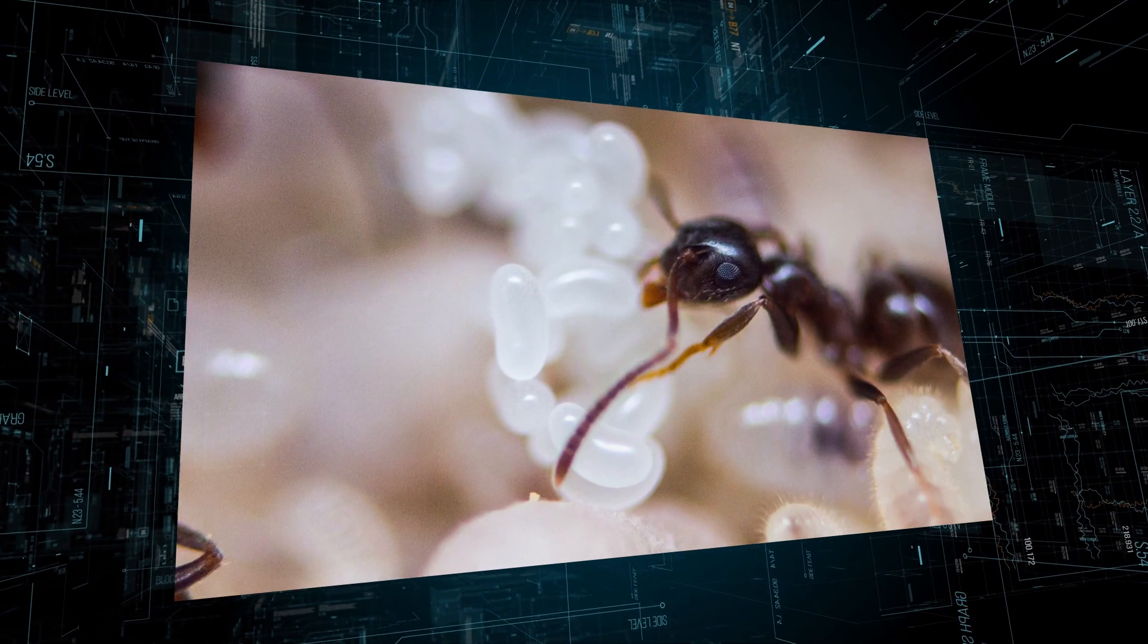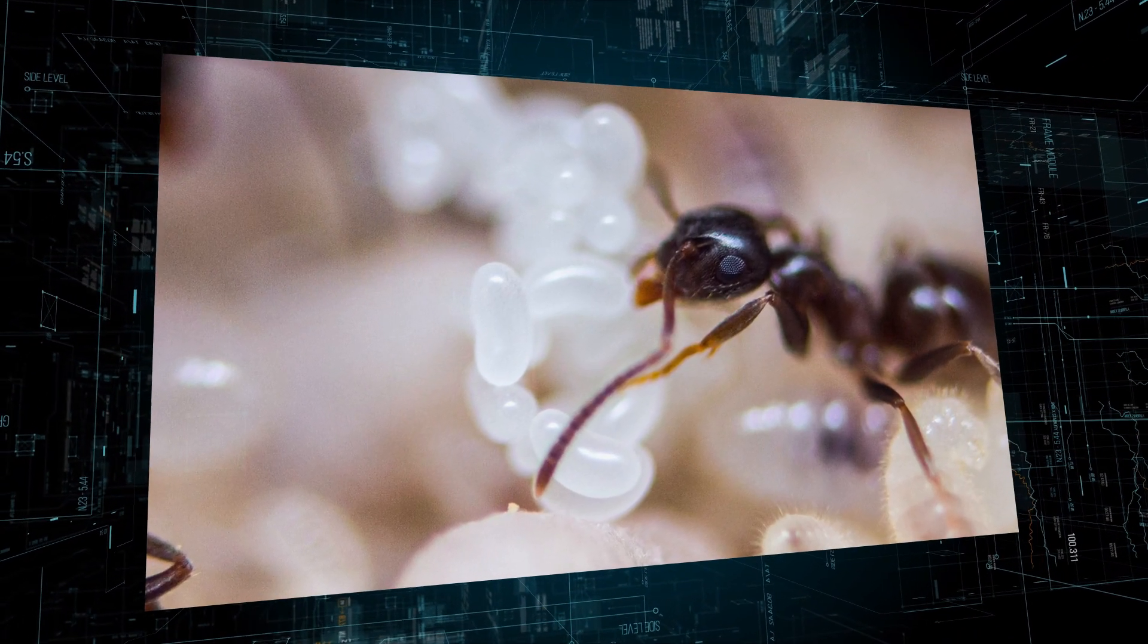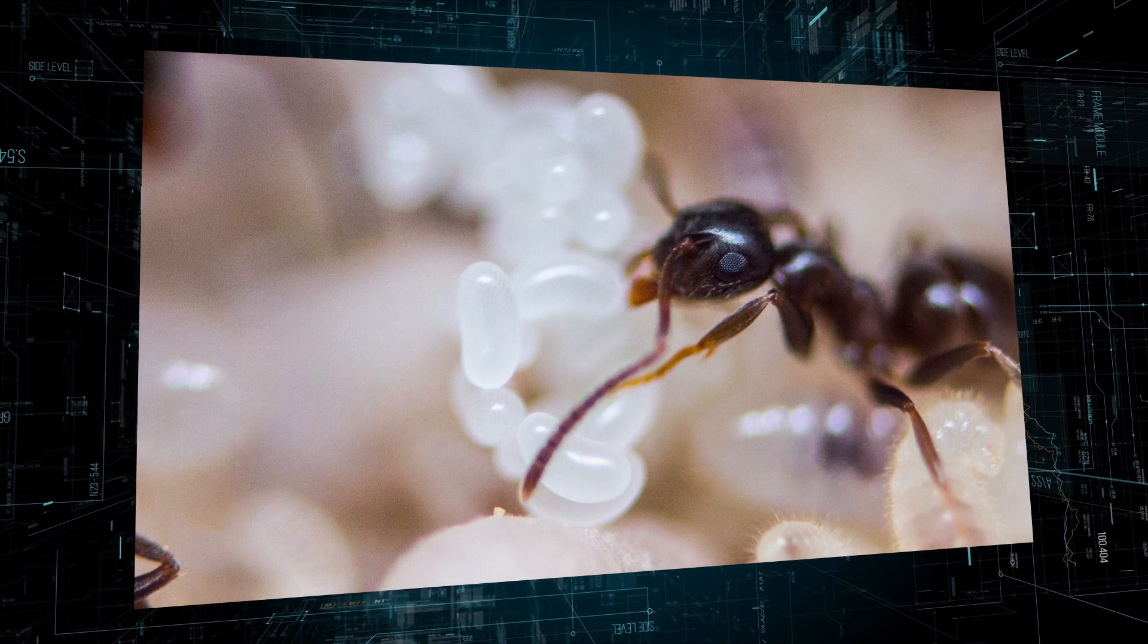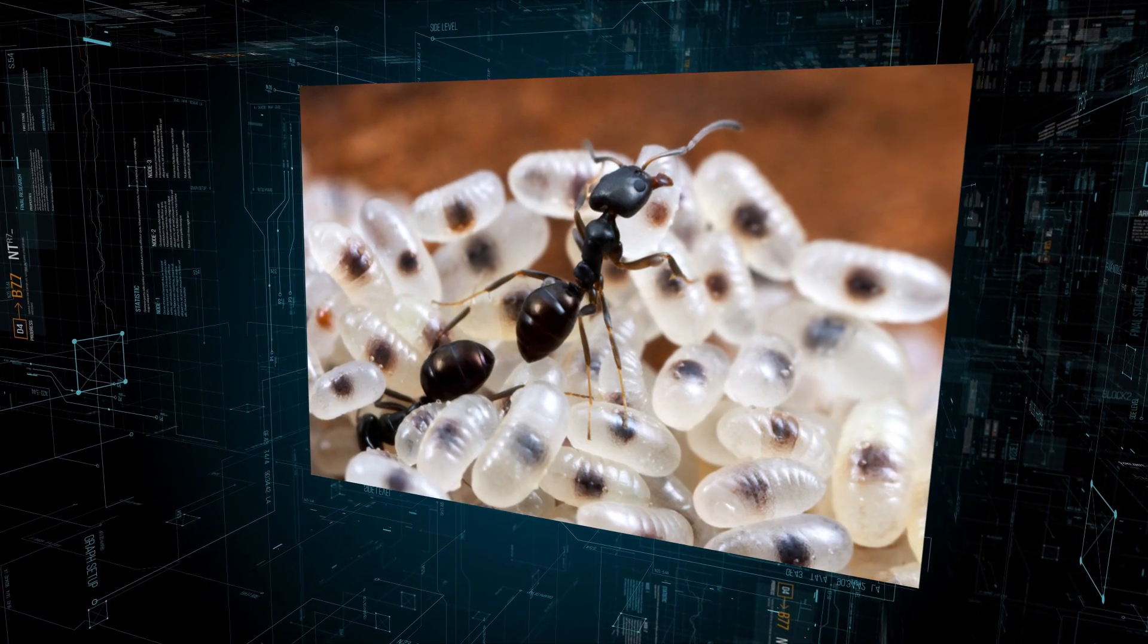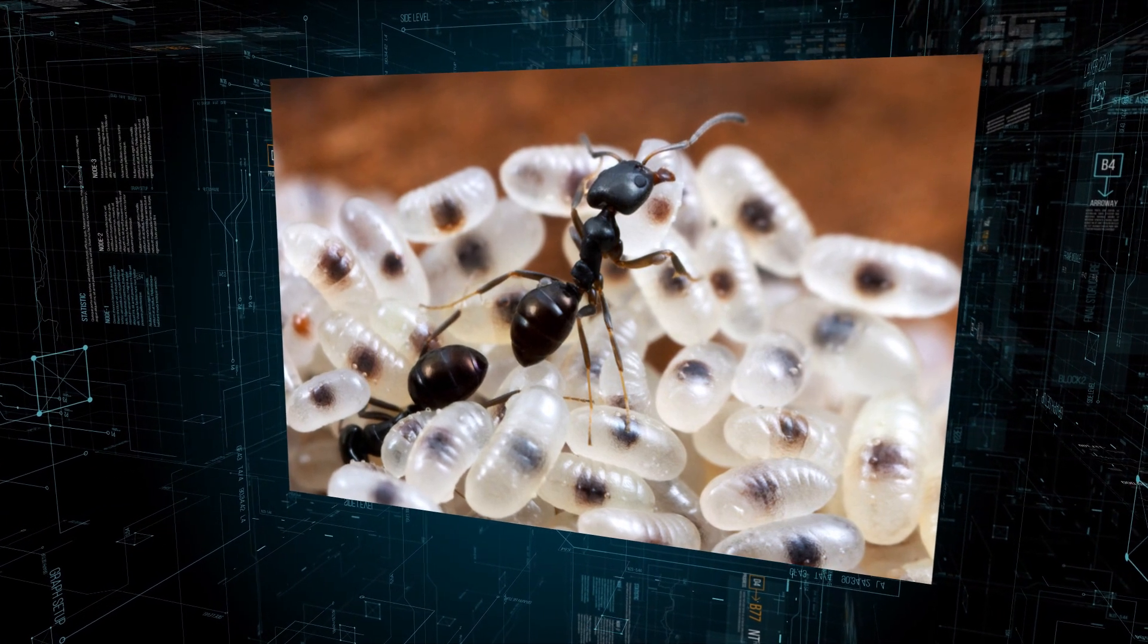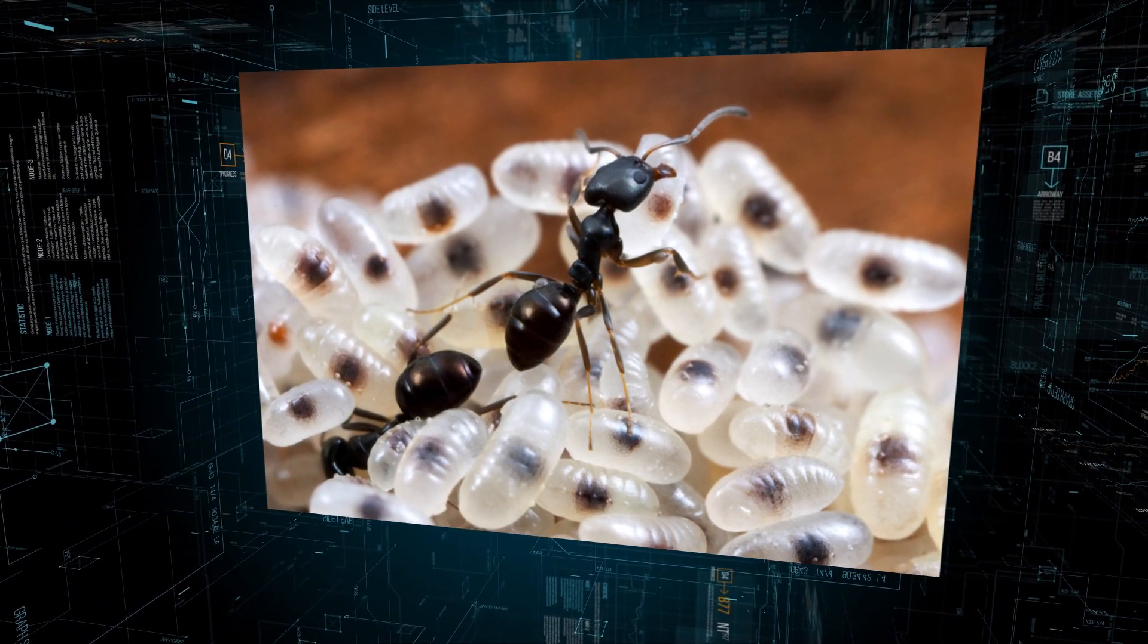In one study of an actual leaf-cutter ant colony, it was calculated that the queen laid about 1000 eggs a day. Myrmecologists and experts say all the eggs are exactly the same.